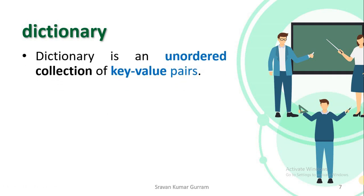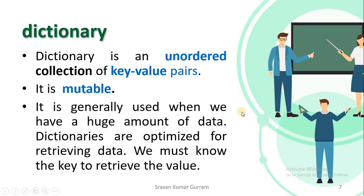The next data type is dictionary. Dictionary is an unordered collection of key-value pairs. It is mutable. Whenever you have a large amount of data and you want to access or retrieve the data, we use dictionaries to optimize the speed of retrieval. With the help of keys, we can retrieve the values easily.